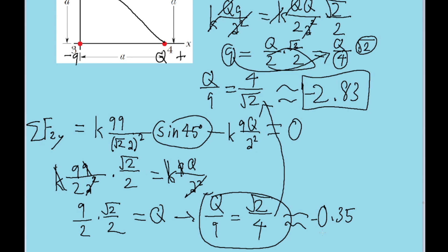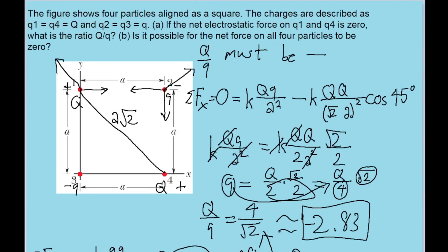So what that tells us is that the charge ratios required to keep those pairs of charges at rest are not the same, which means that it is impossible for all four charges to have a zero net force on them at once, because the conditions required for each of those cases don't match up. So the answer to part B is no, that is not possible.